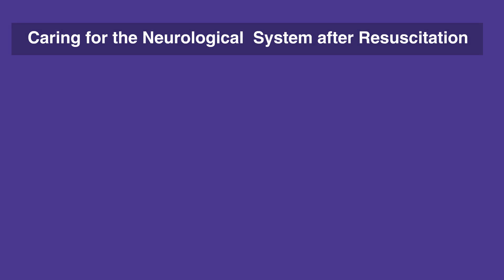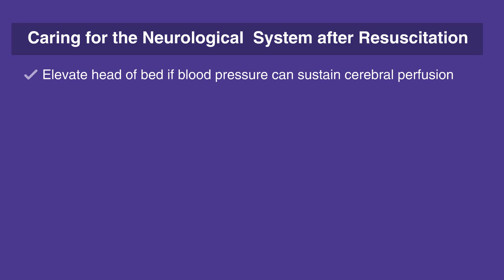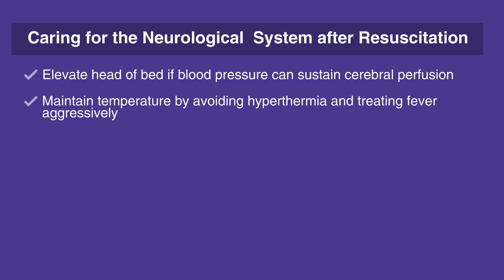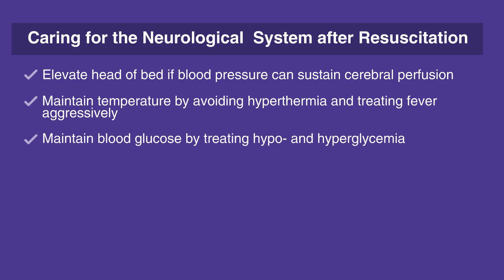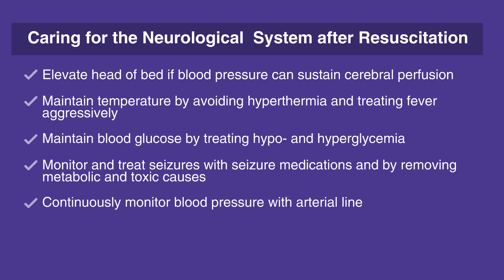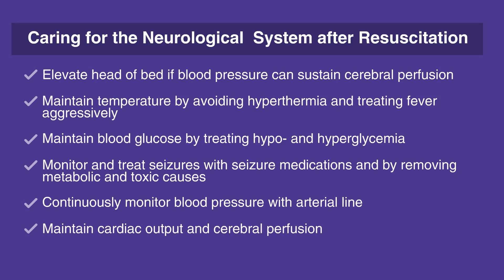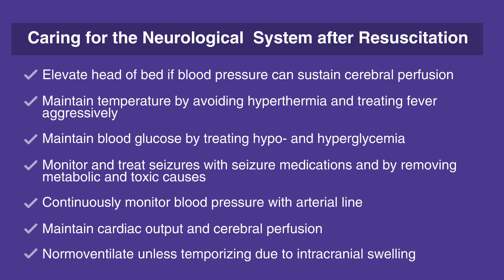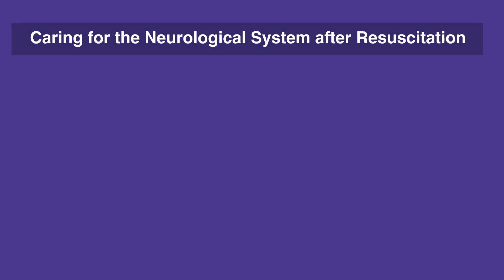When caring for the neurological system after resuscitation, follow this checklist: Elevate the head of bed if blood pressure can sustain cerebral perfusion. Maintain temperature by avoiding hyperthermia and treating fever aggressively. Do not re-warm hypothermic cardiac arrest individuals unless hypothermia is interfering with cardiovascular function, and treat hypothermia complications as they arise. Maintain blood glucose by treating hypo- and hyperglycemia. Hypoglycemia is defined as less than or equal to 60 mg per deciliter. Monitor and treat seizures with seizure medications and by removing metabolic and toxic causes. Continuously monitor blood pressure with arterial line. Maintain cardiac output and cerebral perfusion. Normal ventilate unless temporizing due to intracranial swelling. Perform frequent neurological exams.